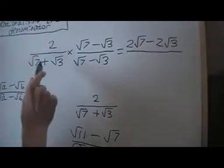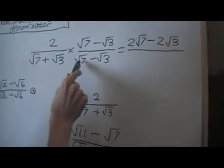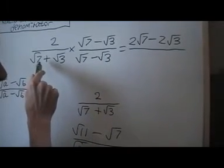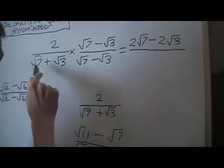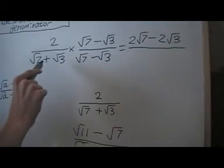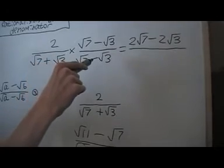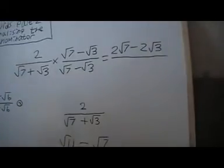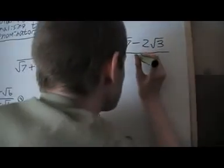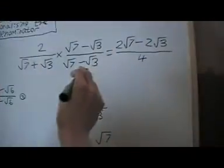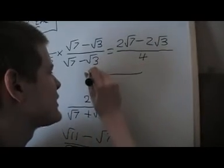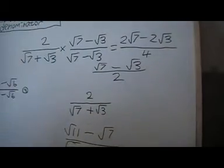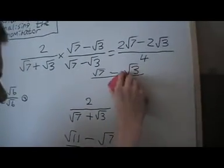The bottom here, we'll get root 7 and root 3 there. Then we'll get a minus root 3 and a minus root 7. Those cancel. Root 7 times root 7 is 7. And root 3 times minus root 3 is minus 3. So I've got 7 over 7 take away 3, which is 4. And then again we can take out the factor of 2. Then we'll be left with root 7 minus root 3 over 2.